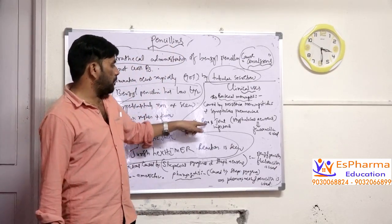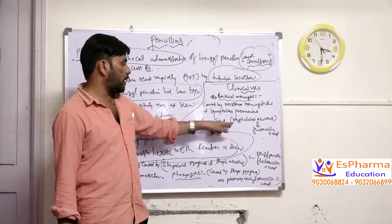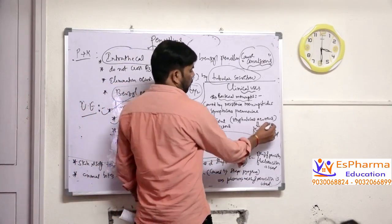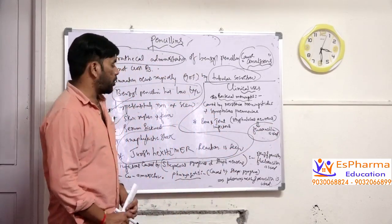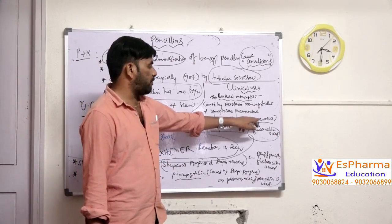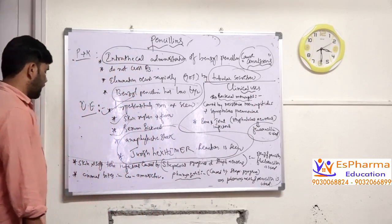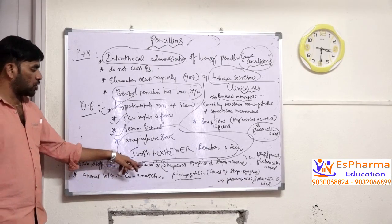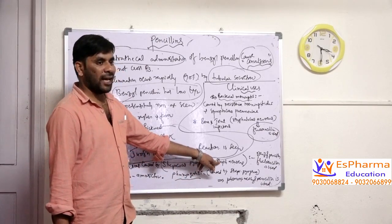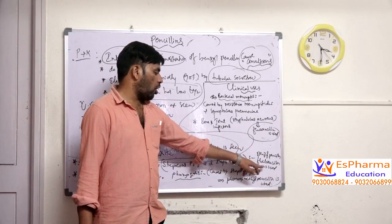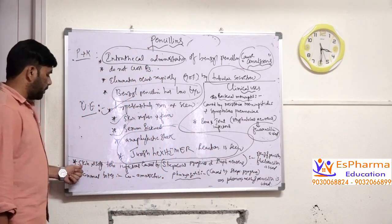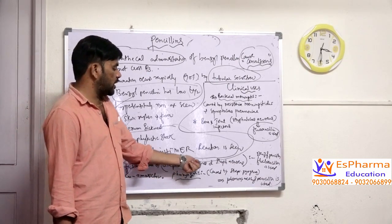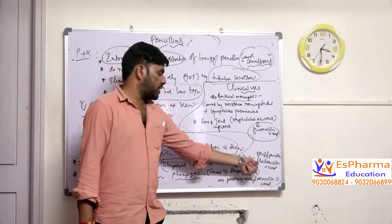For the treatment of bone and joint infection caused by Staphylococcus aureus infection, we use flucloxacillin — a type of penicillin specifically used for bone and joint infections caused by Staphylococcus aureus. For the treatment of skin and soft tissue infection caused by Streptococcus pyogenes and Staphylococcus aureus, we use benzyl penicillin and flucloxacillin.